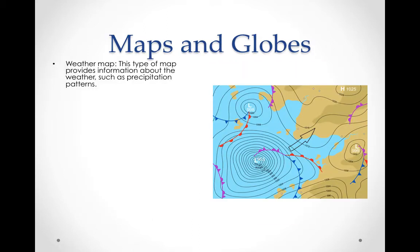Weather maps are used to provide information about weather patterns, such as precipitation, which means rain or snow. To the right you see a weather map for Europe.